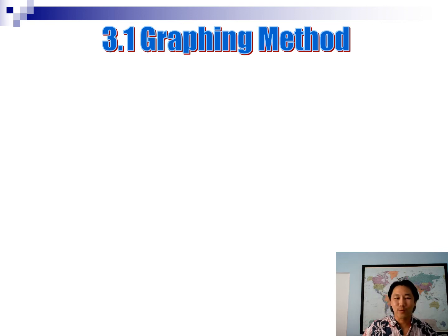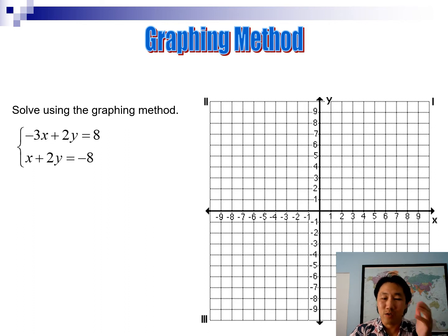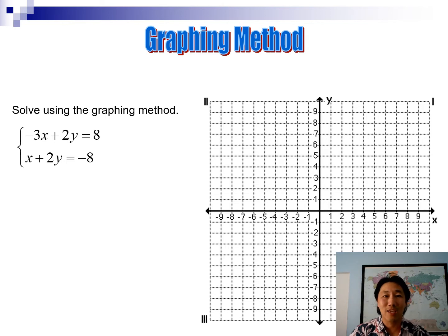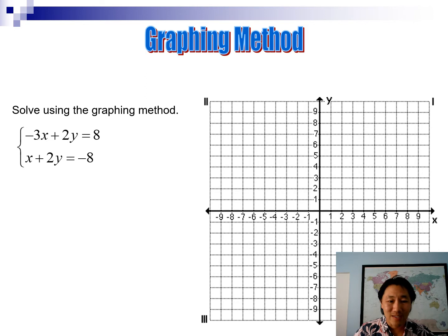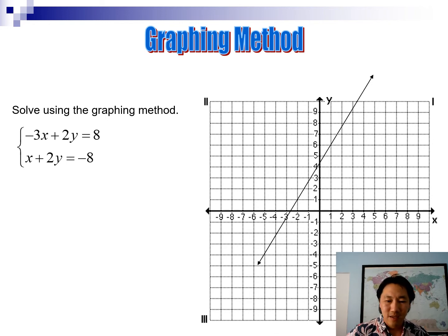Section 3.1 - the graphing method. To use the graphing method, all you have to do is graph both equations on the same coordinate plane. In Algebra 1 you were taught to change both equations to slope-intercept form, which is fine, but you don't have to. If they're in standard form, you can also graph using the cover-up method: cover up the x to find the y-intercept, then cover up the y to find the x-intercept.